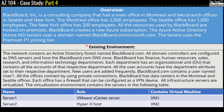The existing environment section shows that the network contains an Azure Active Directory forest named Blackboard.com. All domain controllers are configured as DNS servers and host the Blackboard.com DNS zone. Blackboard has finance, human resources, sales, research, and information technology departments. Each department has an organizational unit containing all accounts of the respective department. All user accounts have the department attribute set to their respective department. New users are added frequently. Blackboard.com contains a user named User1.